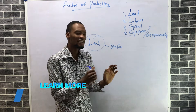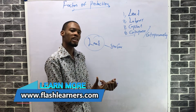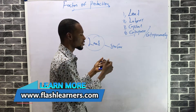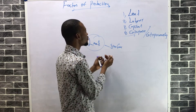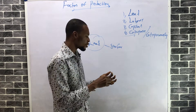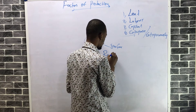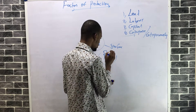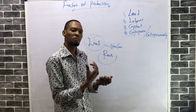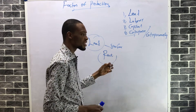Land is fixed and immobile — you can't move land. The reward for land is rent, because you can't take land away. What you pay land owners for the use of land is rent. That's the reward for land.